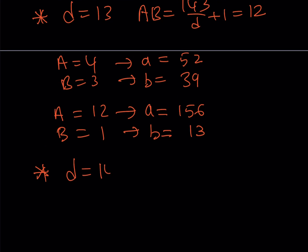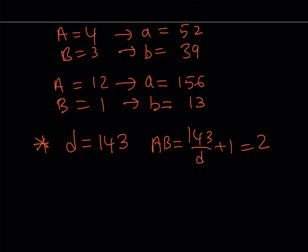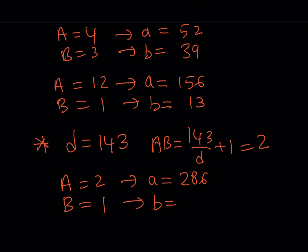Case 4: D equals 143, the maximum value. AB equals 143/143 plus 1 equals 1 plus 1 equals 2. Since big-A and big-B must be relatively prime with product 2, we have big-A equals 2, big-B equals 1. Then small a equals 2 times 143 equals 286, and small b equals 1 times 143 equals 143.